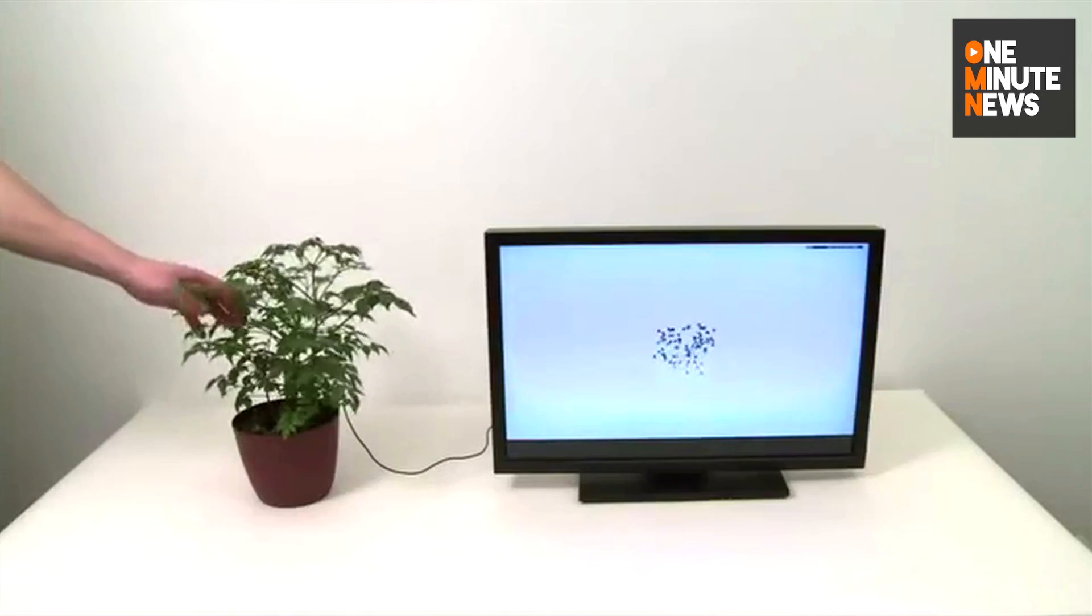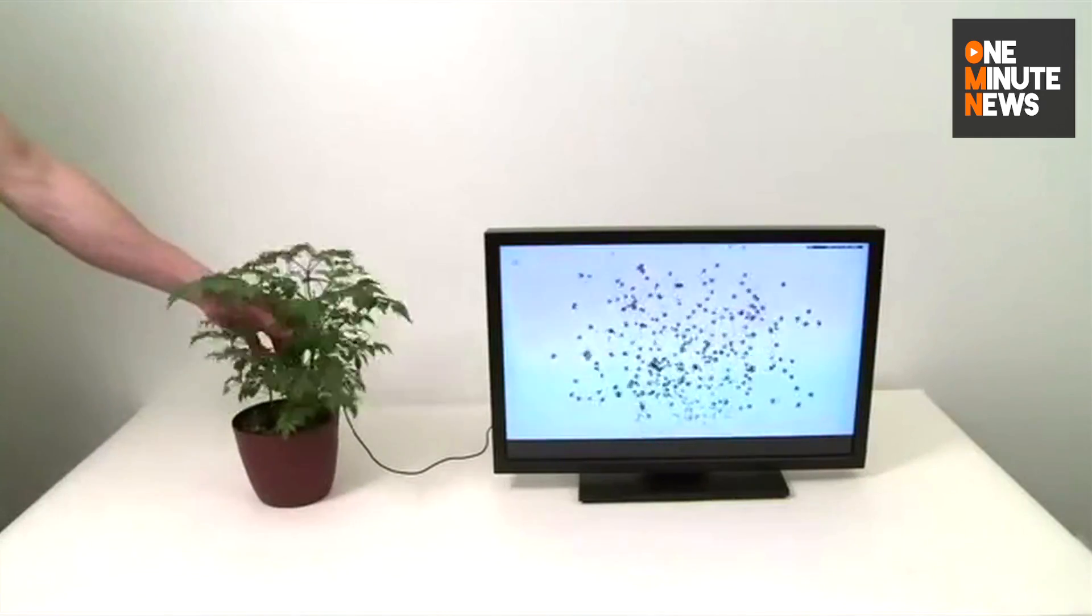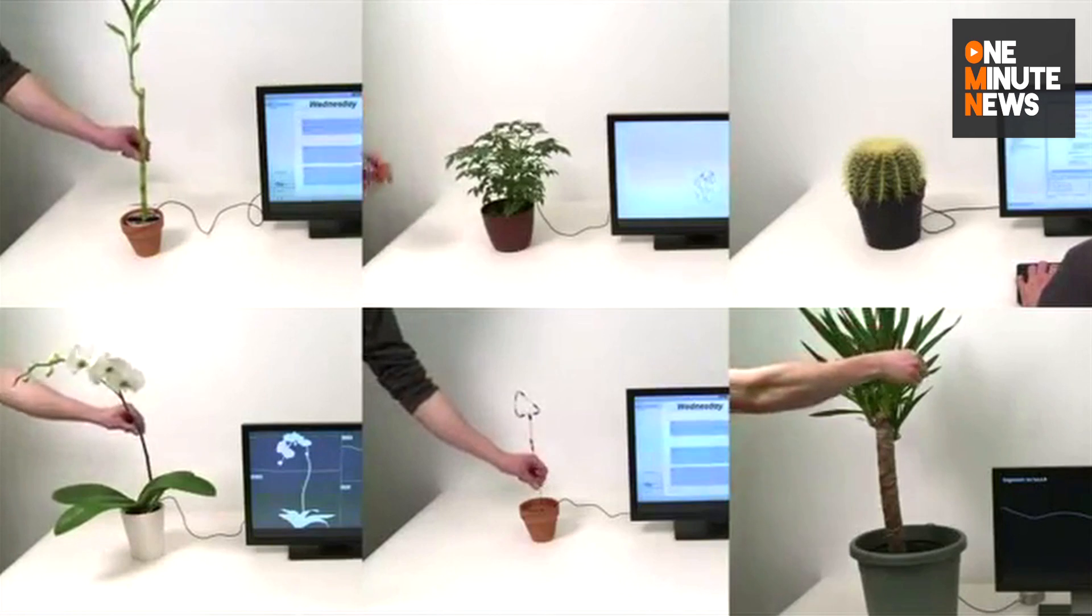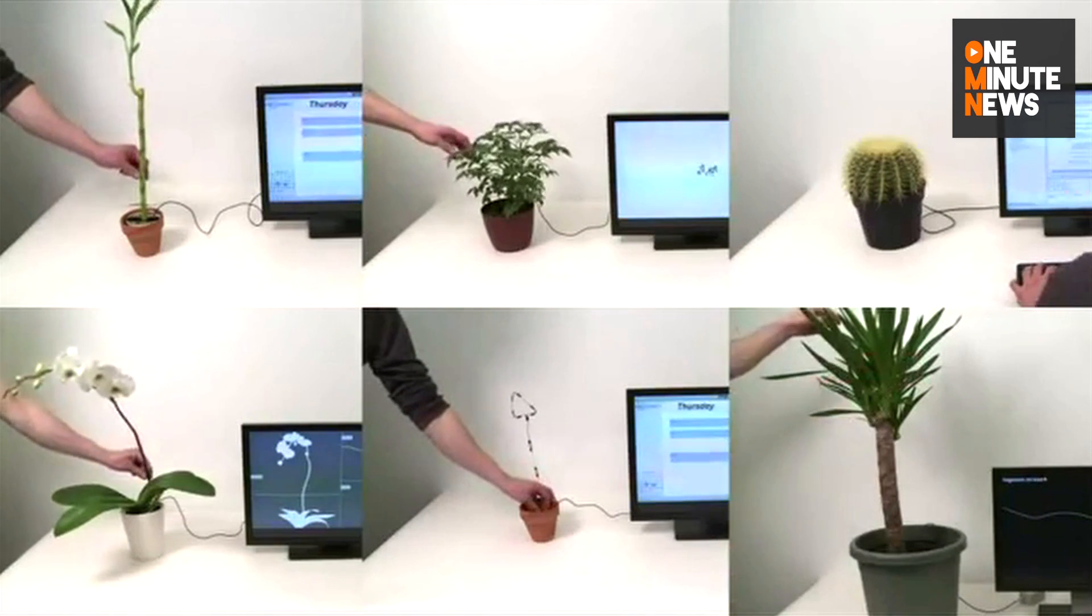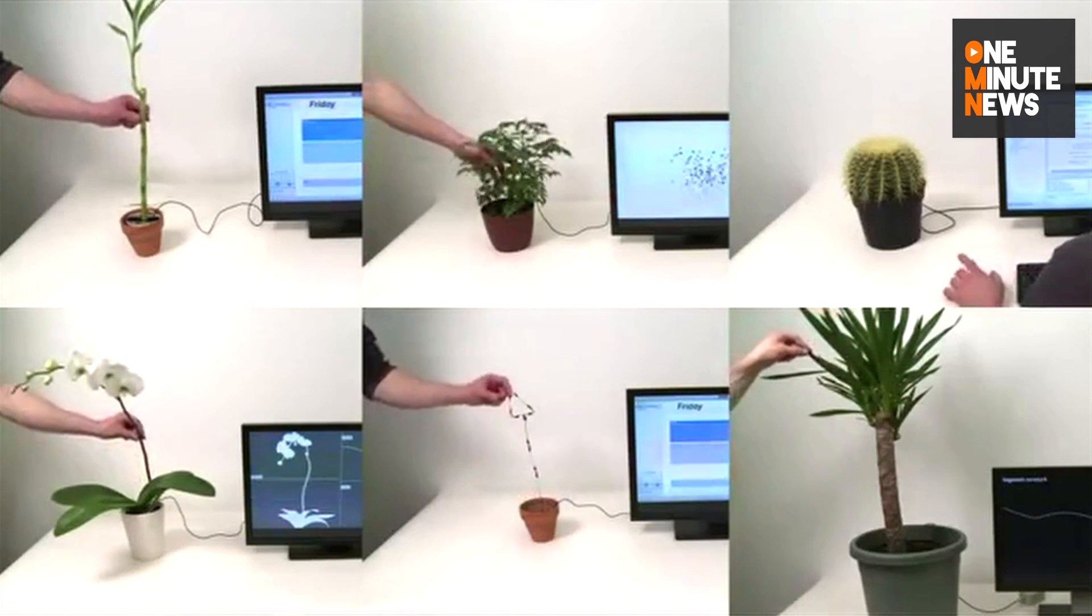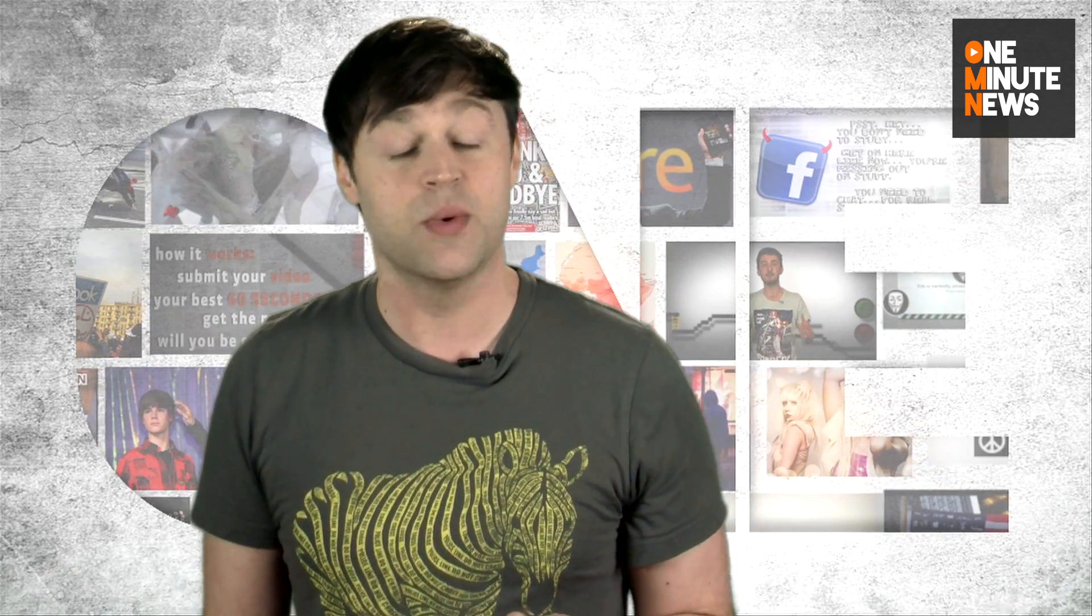Disney is currently blowing a wad of cash on the Botanicus Interacticus project, which involves wiring up various live plants to sensors and creating touch-sensitive applications. For instance, they transformed this everyday orchid into a theremin.